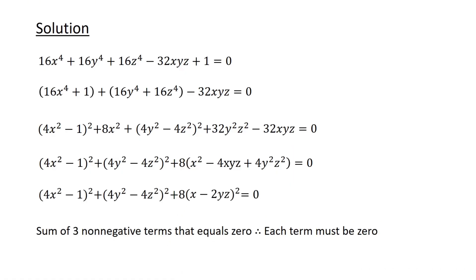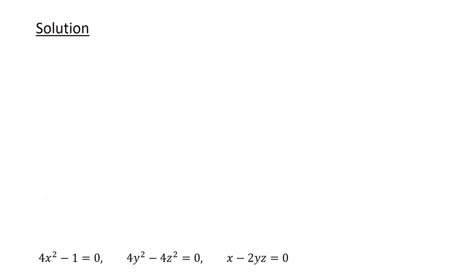Since the equation is a sum of three non-negative terms that equals zero, each term must be zero. That is, we have 4x squared minus 1 equals 0, 4y squared minus 4z squared equals 0, and x minus 2yz equals 0.